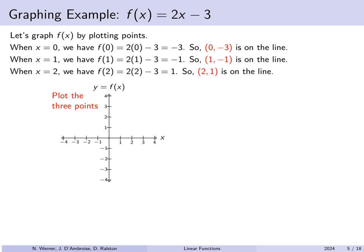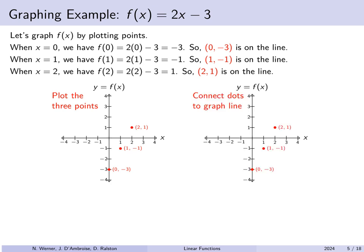Let's plot all those points: (0, −3), then (1, −1), and (2, 1). We connect the dots to get a straight line through all three. All three points should be collinear — on the same line. And there's our graph of f of x equals 2x minus 3.